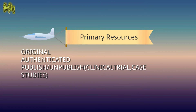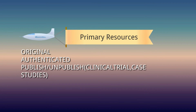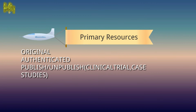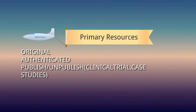We now proceed to primary resources. Primary resources are the most preferred information because they contain original, authenticated information from clinical trials and case studies, whether published or unpublished. In clinical trials, researchers conduct steps to obtain results and provide conclusions based on their data, making it truly original information.